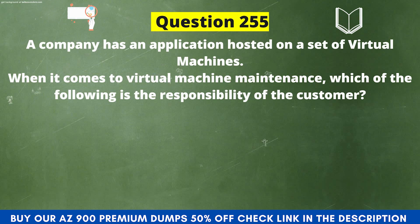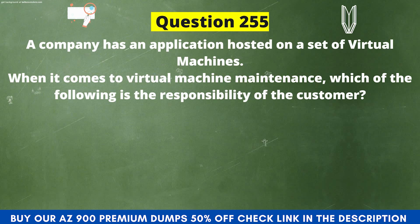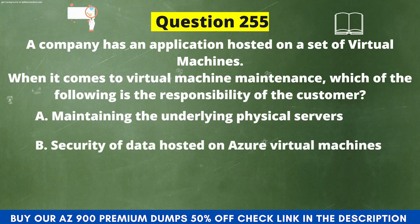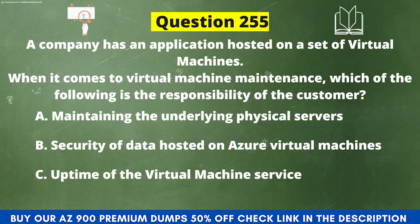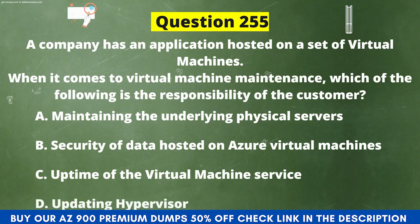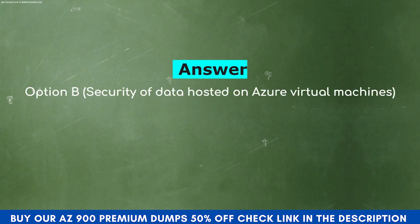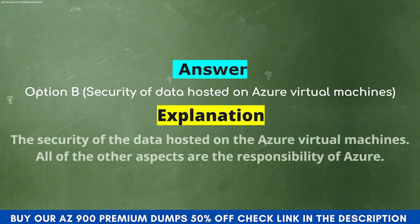Next question. A company has an application hosted on a set of virtual machines. When it comes to virtual machine maintenance, which of the following is the responsibility of the customer? Option A: Maintaining the underlying physical servers. Option B: Security of data hosted on Azure virtual machines. Option C: Uptime of the virtual machine service. Option D: Updating hypervisor. The correct answer is Option B, Security of data hosted on Azure virtual machines. Explanation. The customer is responsible for the security of the data hosted on the Azure virtual machines. All other aspects are the responsibility of Azure.